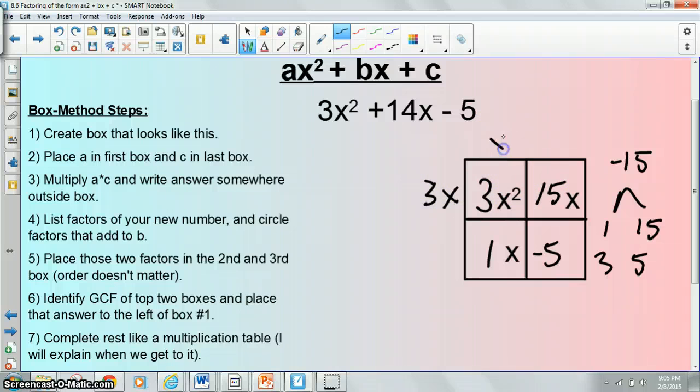3x times what is 3x squared? That answer would be x. x times what is 1x? That would be 1. I'm going to back up for a second. This should have been negative 1. 15 and negative 1 gets you to 14. So that would have changed this answer. x times negative 1 is negative 1x. So 3x times what is 15x? That would be 5. Then as your check, 5 times negative 1 is negative 5. So your answer then is 3x minus 1 and x plus 5.